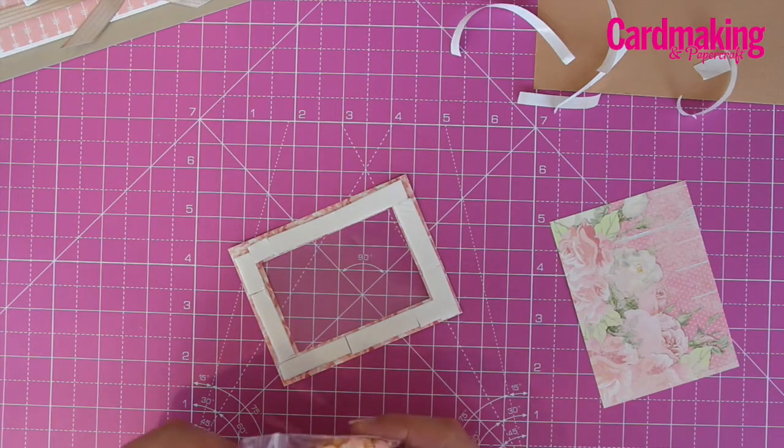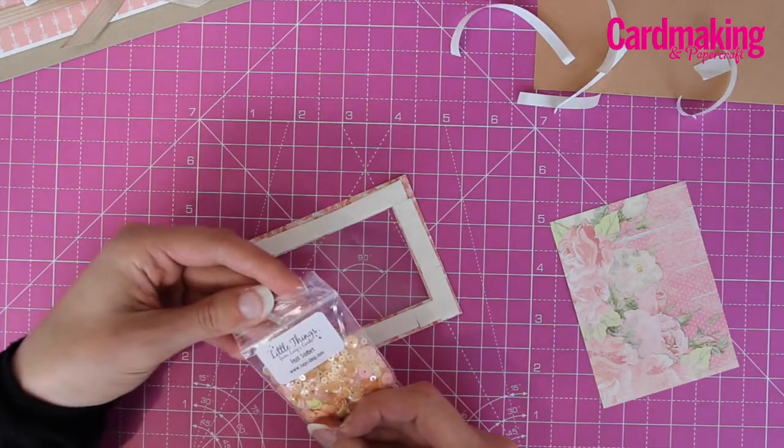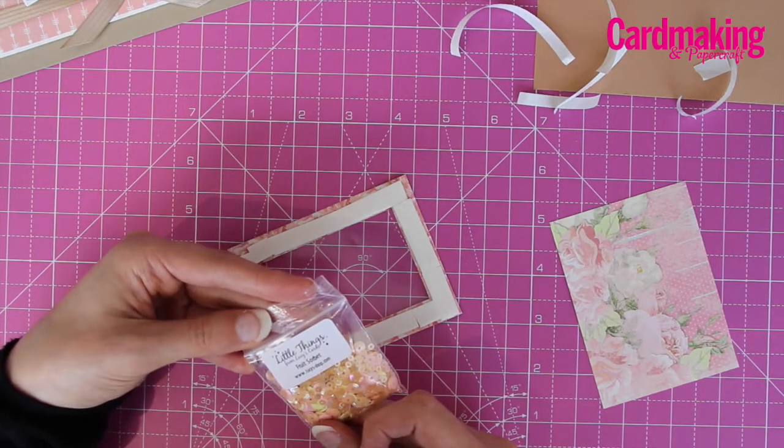Then pour some sequins onto the frame. I'm using the fruit sorbet shaker selection from Lucy's Cards.